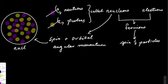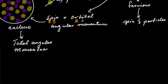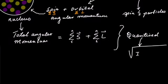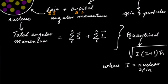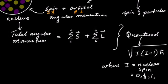The nucleons, meaning the neutrons and protons, have spin angular momentum as well as orbital angular momentum. The total angular momentum of a nucleus is quantized according to the square root of I into I plus 1, h-bar, where the nuclear spin is 0, half, 1 and so forth.